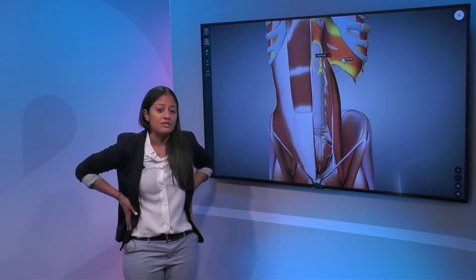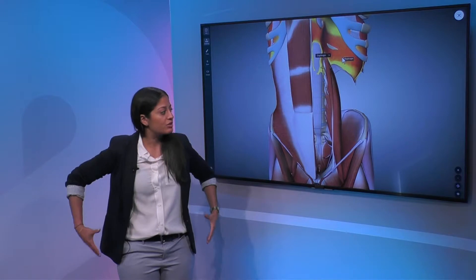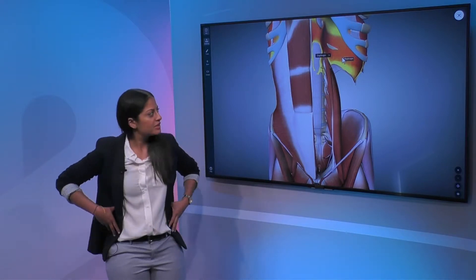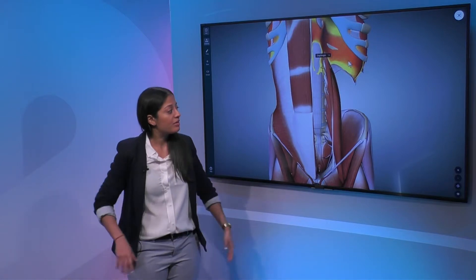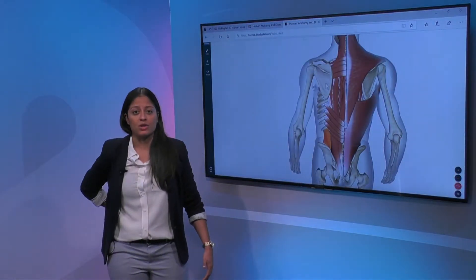You also have on your sides your oblique muscles and your quadratus lumborum, and then on the back you have your paraspinals and your multifidus as well.